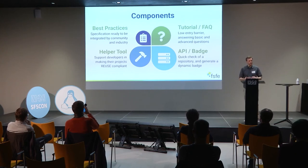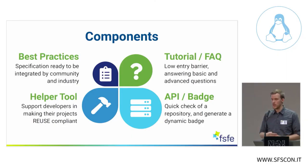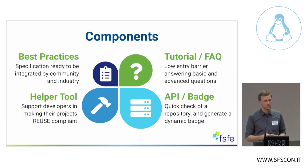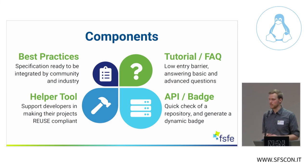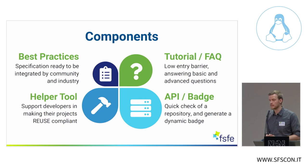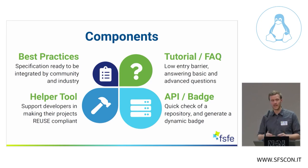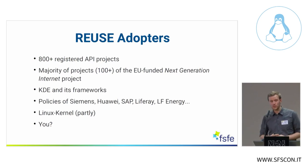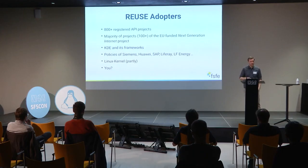REUSE has a number of components. Over the years we have developed: the best practice specification, which can be and has been picked up by industry and communities; a tutorial and FAQ covering licensing in general to onboard developers unfamiliar with copyright; the helper tool that not only lints but also helps in becoming REUSE compliant; and the API — REUSE as a service — where you can register your project online and get a badge to include in your repository. We know of 800 projects registered with the API.